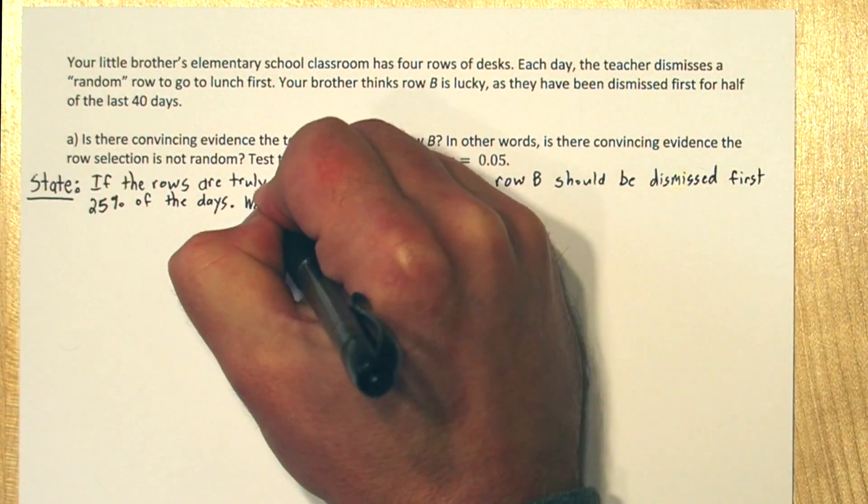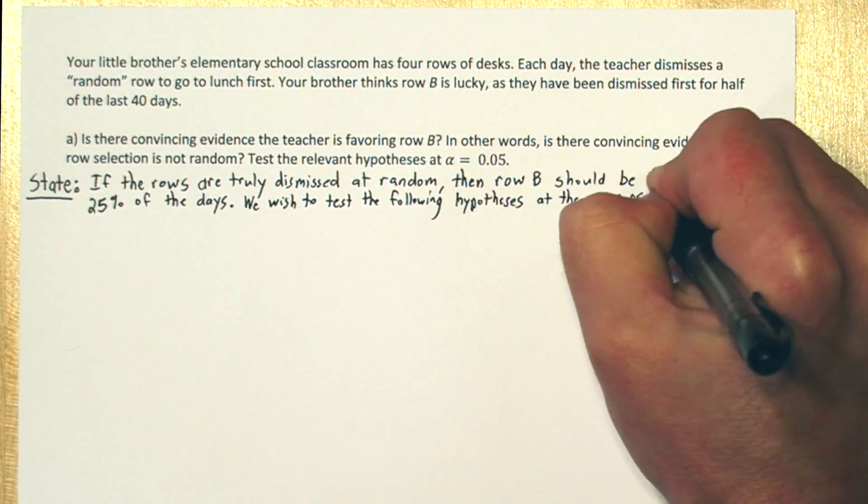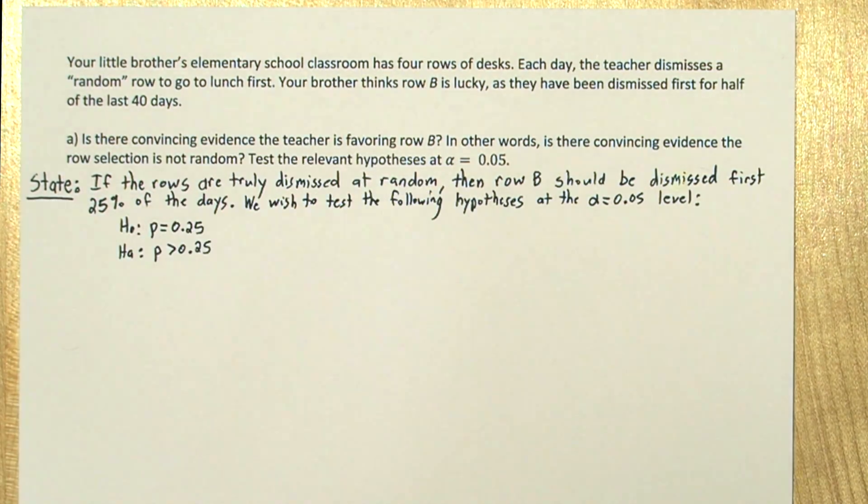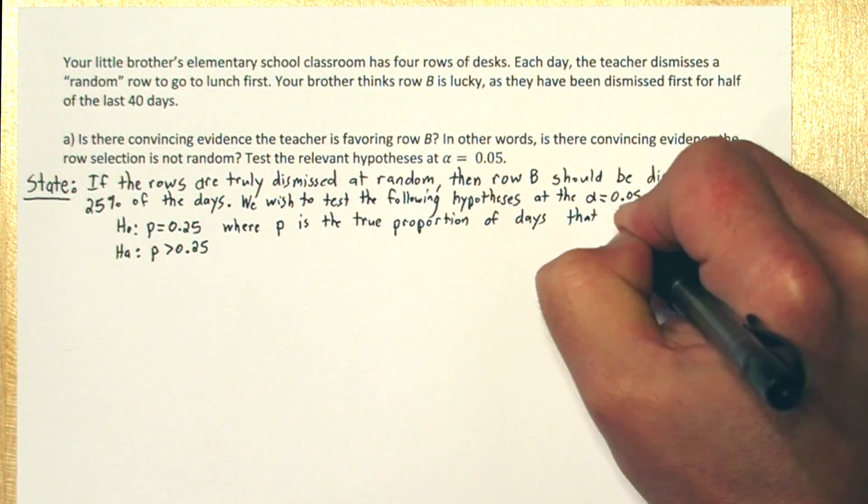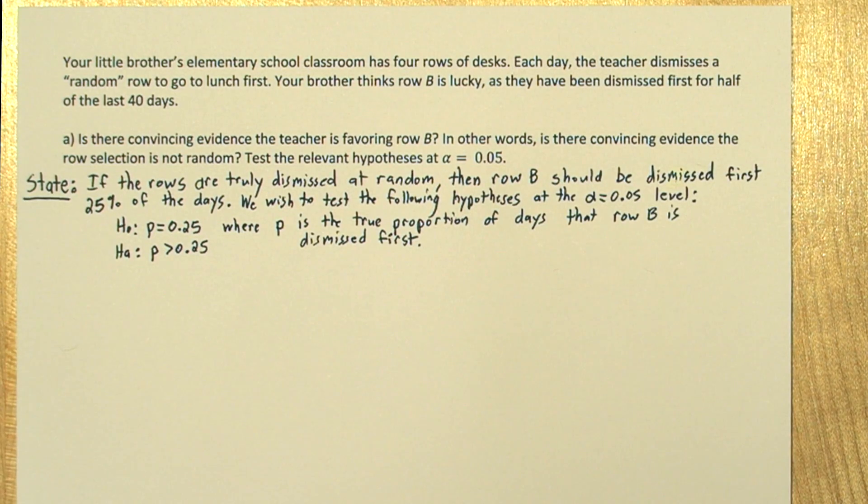So we wish to test the following hypotheses at the alpha equals 0.05 level. Our null hypothesis is that P equals 0.25, and our alternative hypothesis is that P is greater than 0.25, where P is the true proportion of days that row B is dismissed first. So notice our state step has the significance level alpha equals 0.05, and also defines our hypotheses and our parameter of interest.